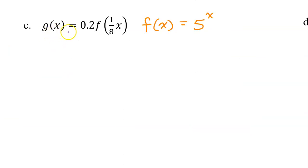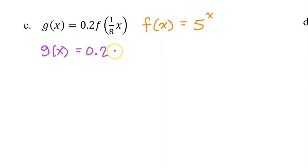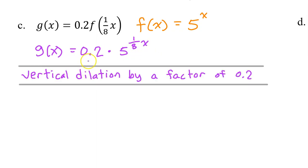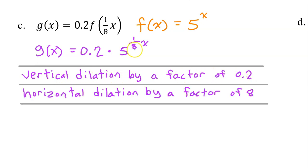Part C: g of x equals 0.2 times f at 1 eighth x. I have brought down the 0.2. Since f at x is 5 to the x power, f at 1 eighth x is 5 to the 1 eighth x power, so this will be 0.2 times 5 to the 1 eighth x power. The 0.2 in the front is a vertical dilation by a factor of 0.2, and the 1 eighth multiplying the x is a horizontal dilation by a factor of 8 — for a horizontal dilation, you need to take the reciprocal.